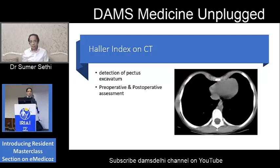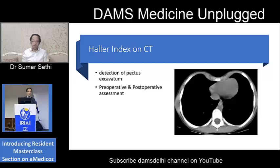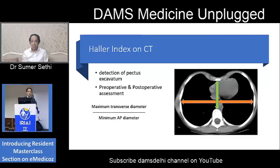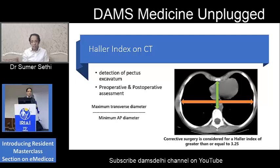I have taken a sample CT case of pectus excavatum to show you what Haller's index is. This was the question asked this year in the JIPMER exam — in which disease do you use Haller's index? Haller's index on CT is the ratio of the maximum transverse diameter to the minimum AP diameter of the chest. If this index is greater than 3.25, it is generally taken as an indication for surgery.